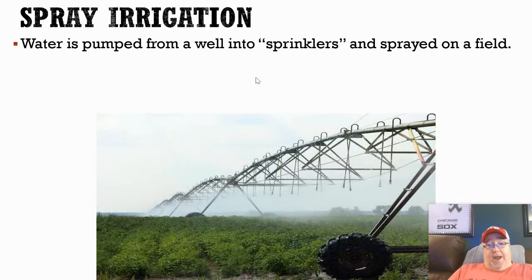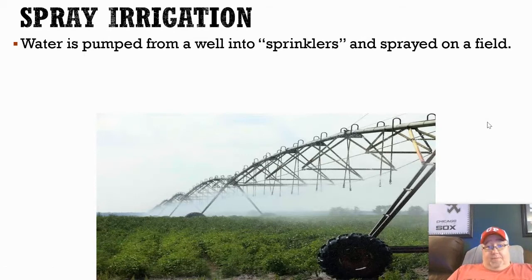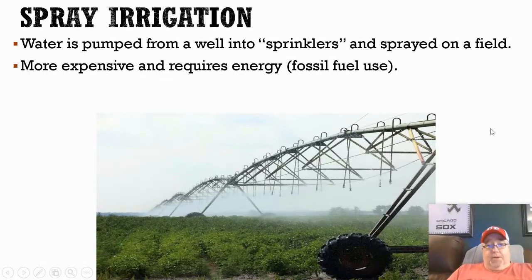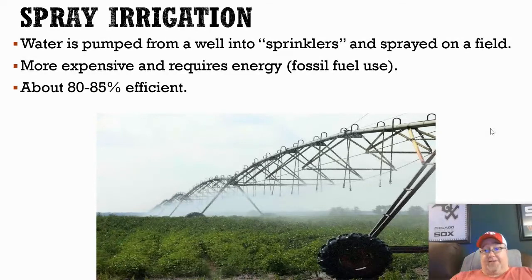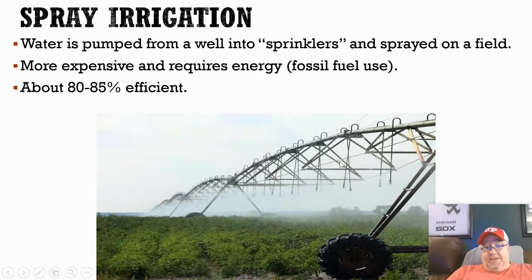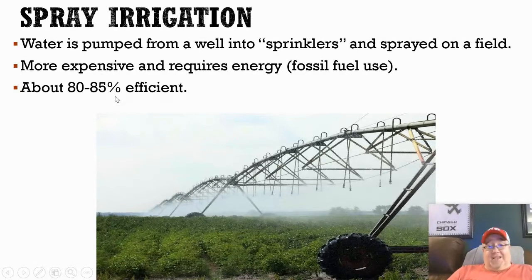Spray irrigation uses sprinklers or large mechanized equipment to spray water across the field. This usually requires a lot of fossil fuels because the equipment is motorized — they have to pump a lot of water in. It's a little more efficient than the other two at about 80 to 85% efficient, but they still lose about 15 to 20% of the water to evaporation.